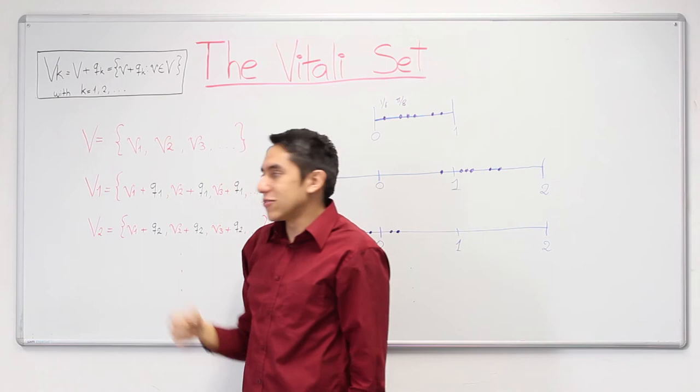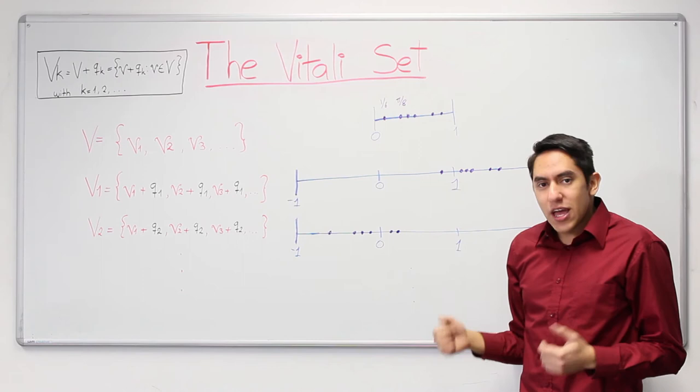Note also that these points are pairwise disjoint, and they stay always between minus 1 and 2.